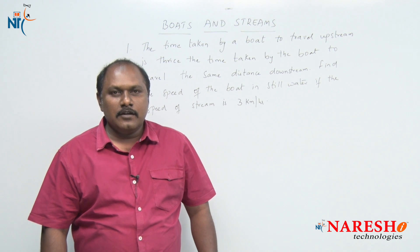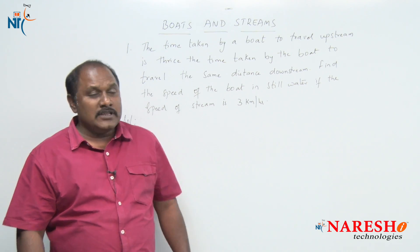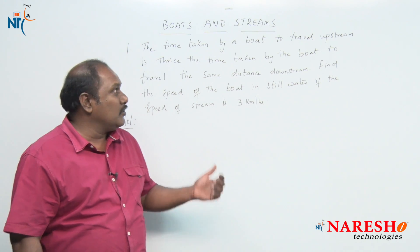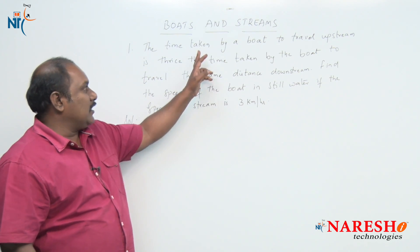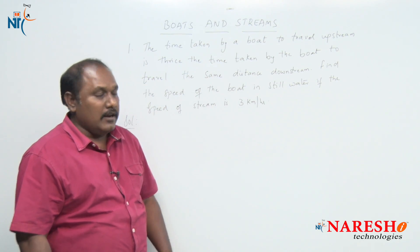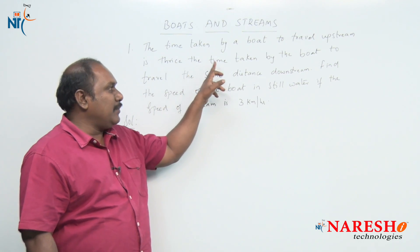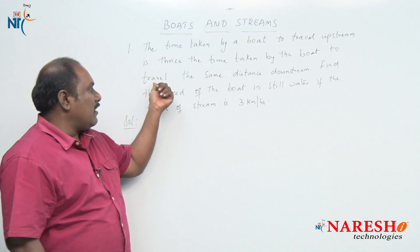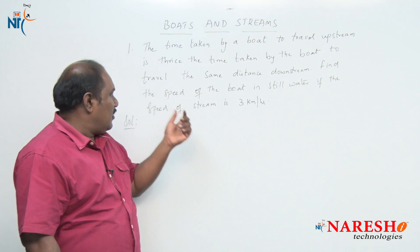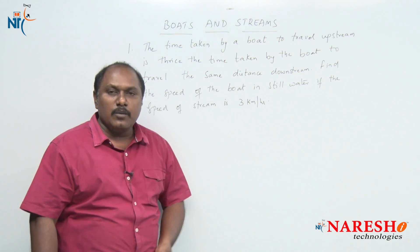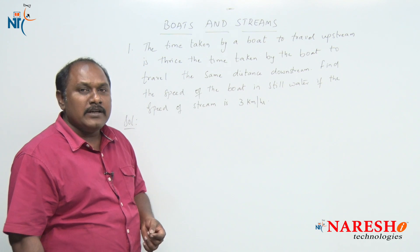Hi friends, welcome to Narayshai Technologies, welcome to the second session on Boats and Streams. The first question: the time taken by a boat to travel upstream is thrice the time taken by the boat to travel the same distance downstream. Find the speed of the boat in still water if the speed of the stream is 3 km per hour.